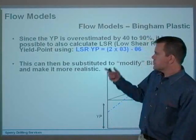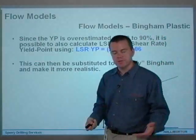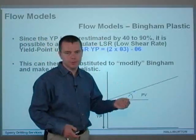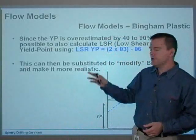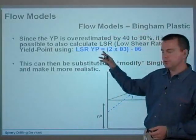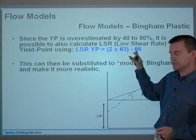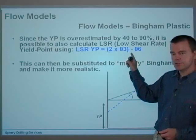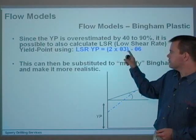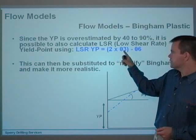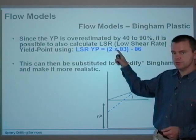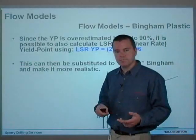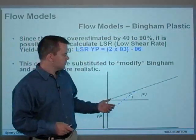How can we overcome this? Well, one way that we can overcome it is, since it's overestimated by 40 to 90%, it's actually possible to calculate the low shear rate yield point using this equation here. LSRYP, or low shear rate yield point, equals 2 times theta 3 minus theta 6. So that's your lower shear rates as measured on the fan viscometer, the fan rheometer. You've got 2 times theta 3 minus theta 6, as opposed to 2 times theta 300 minus theta 600. So this can actually be substituted to modify Bingham and make it more realistic.